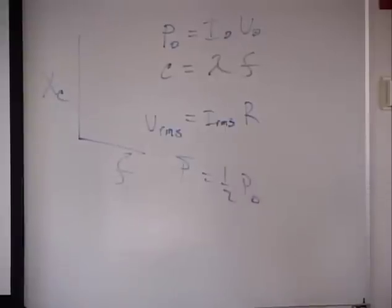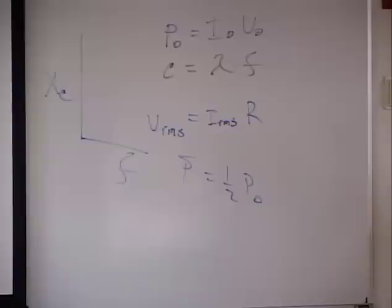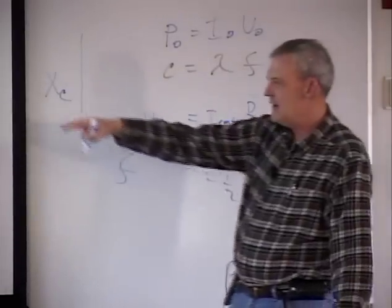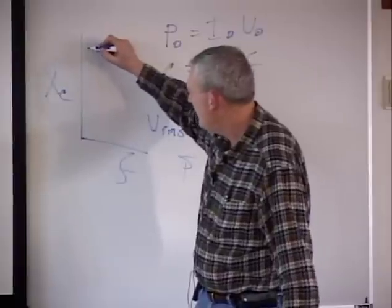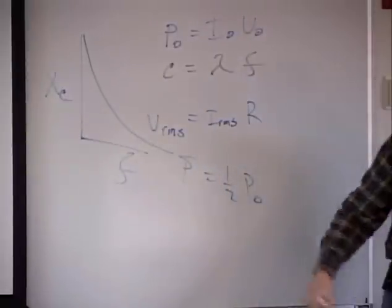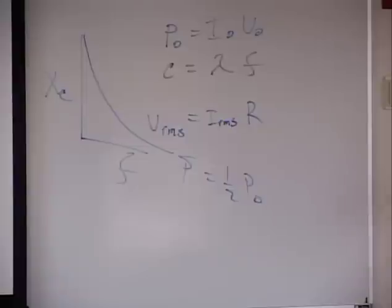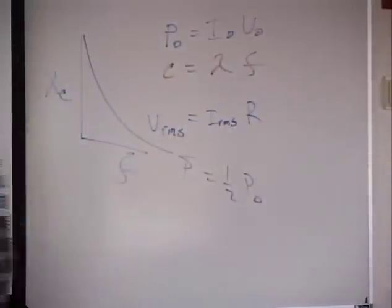The relationship between Xc and frequency looks like a hyperbolic curve: as frequency approaches infinity, Xc approaches zero — the capacitor offers no resistance because it can't collect charge fast enough to slow the current.